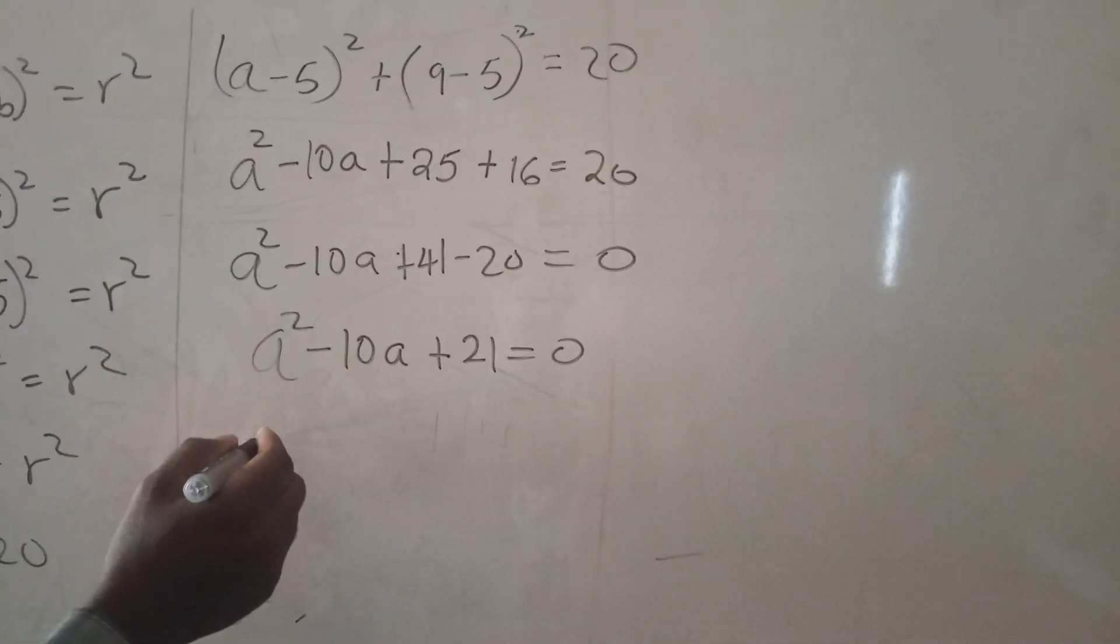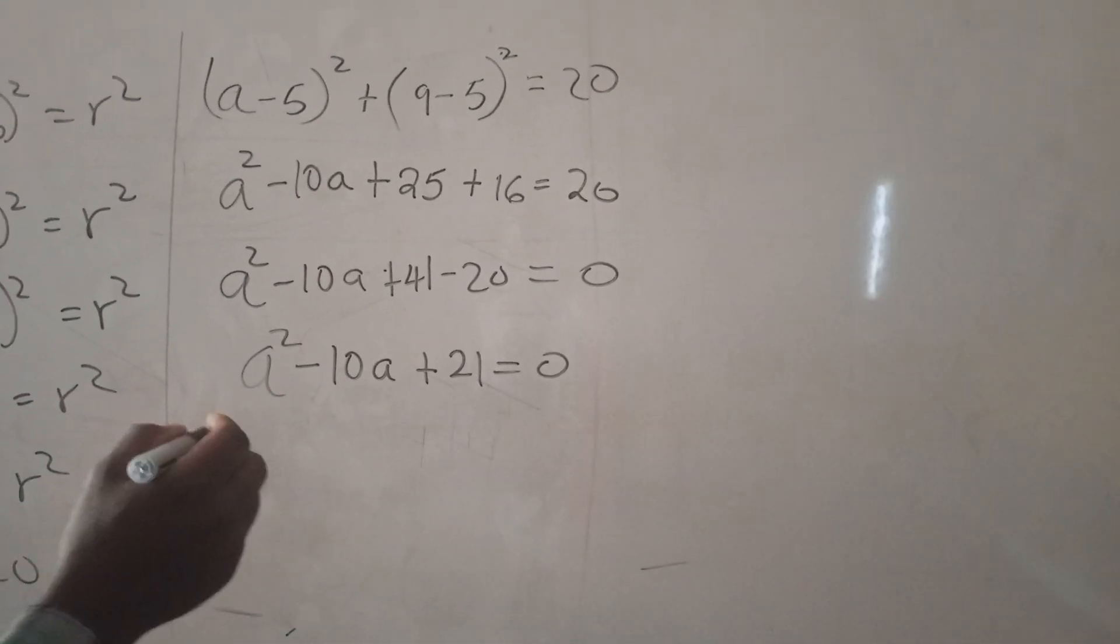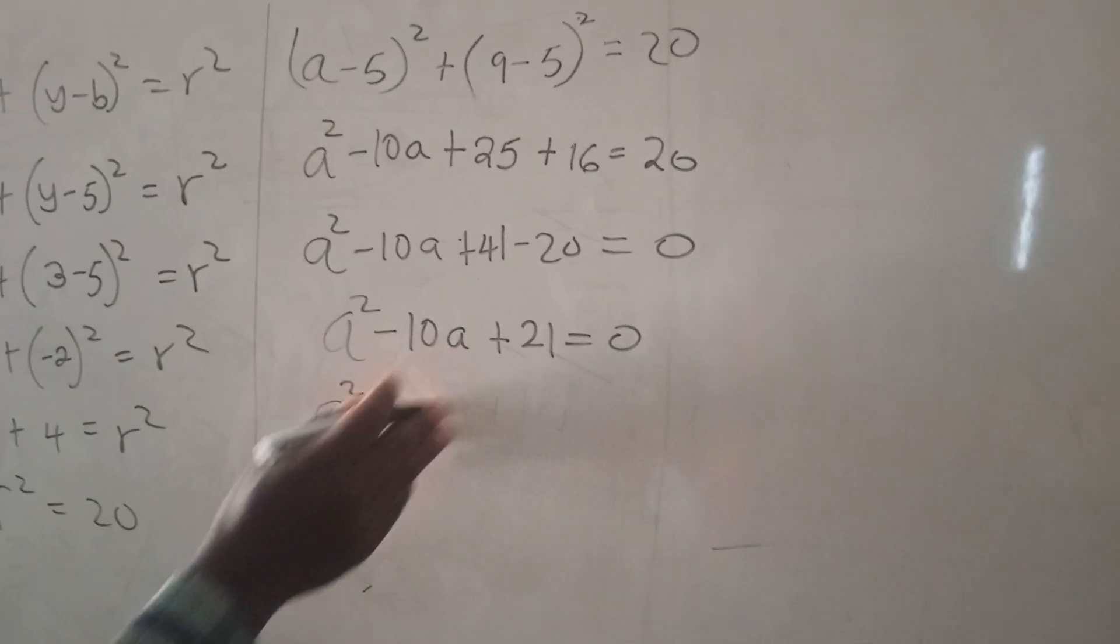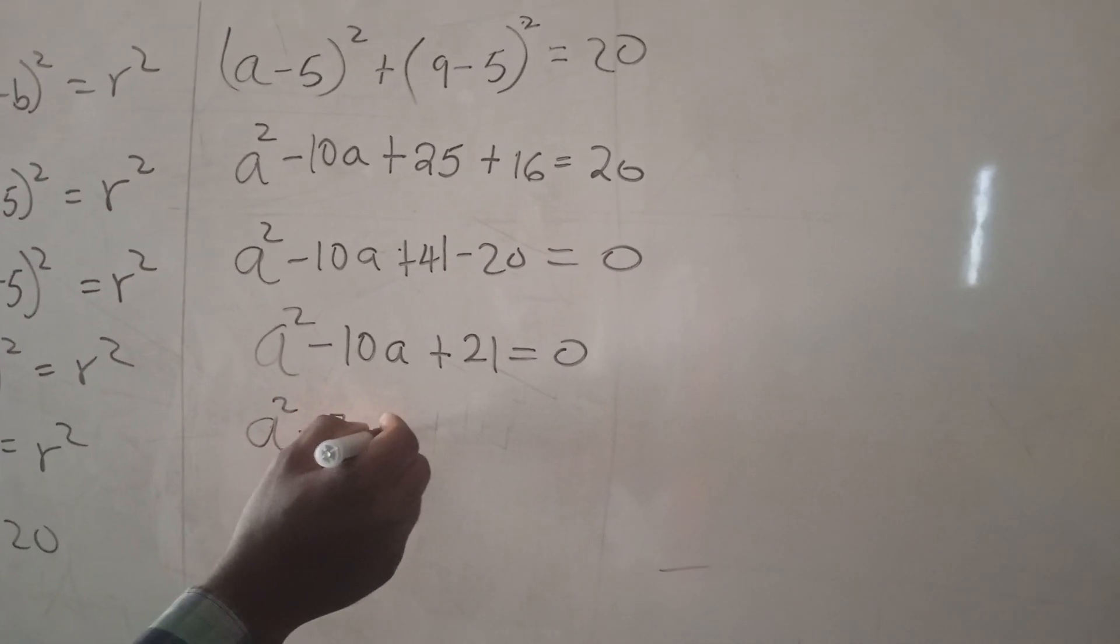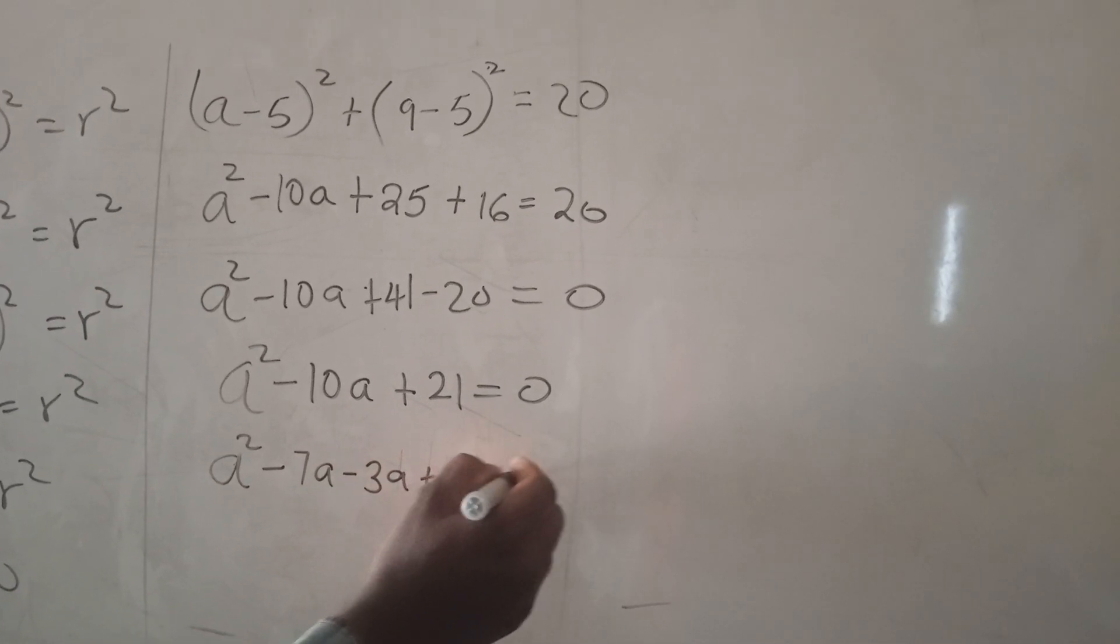So the two numbers are -7 and -3. We are going to replace this as a² - 7a - 3a + 21 = 0.